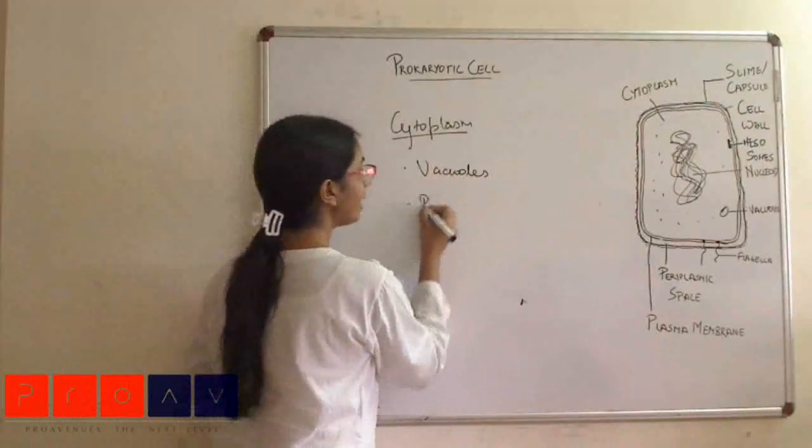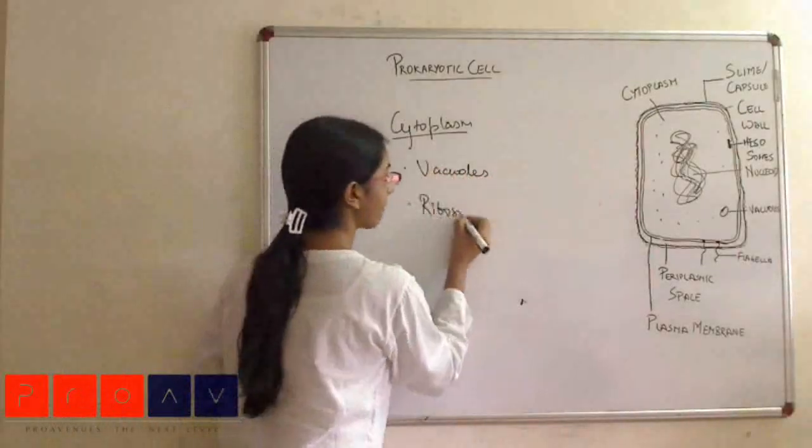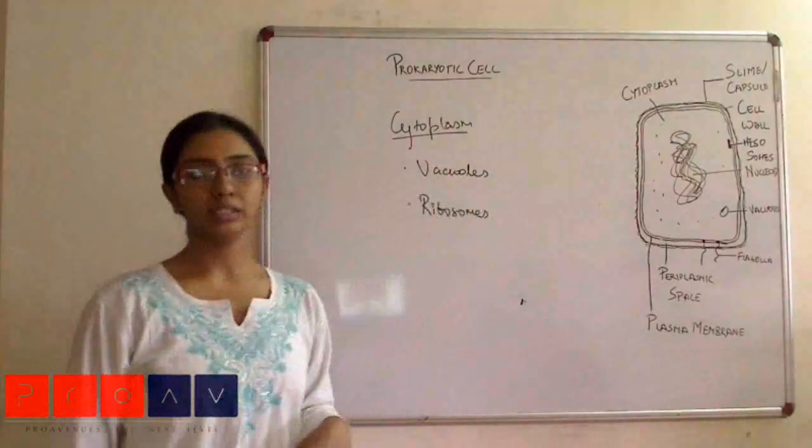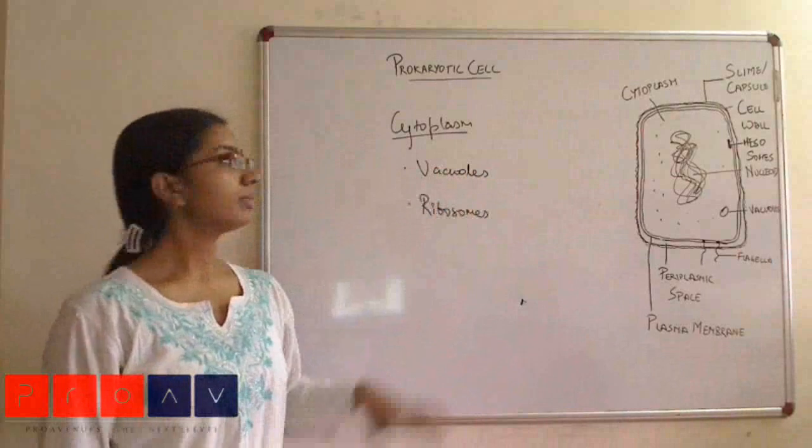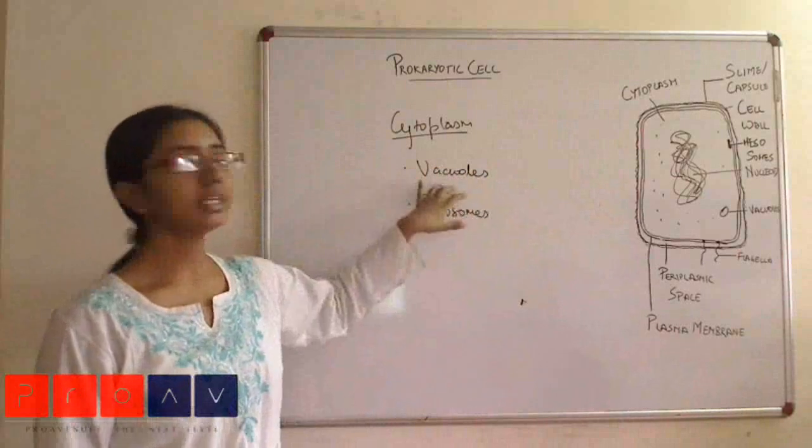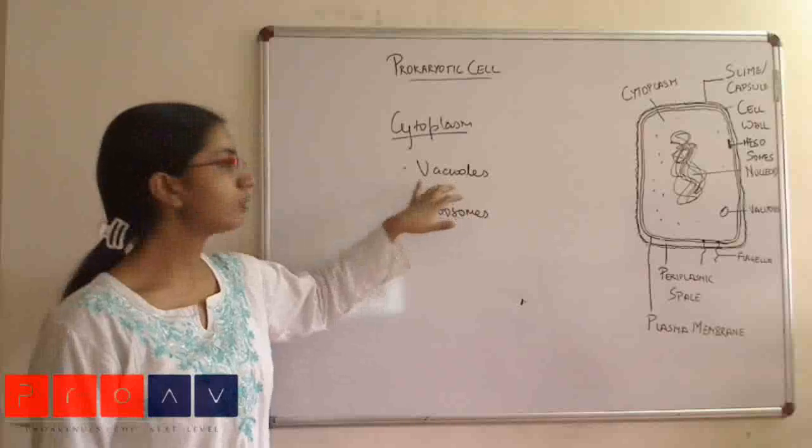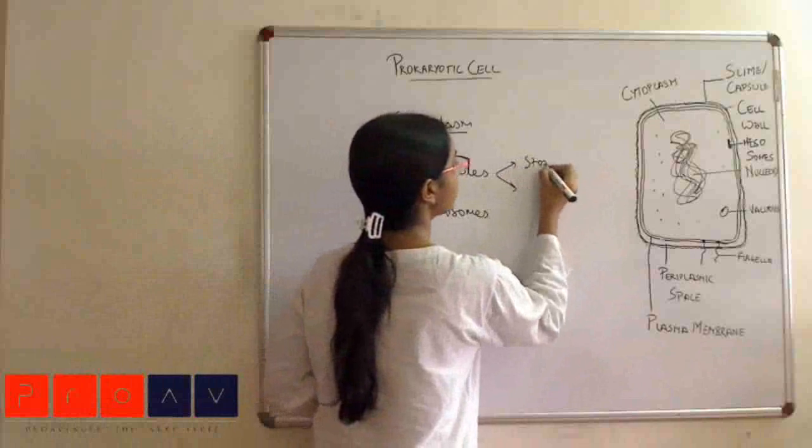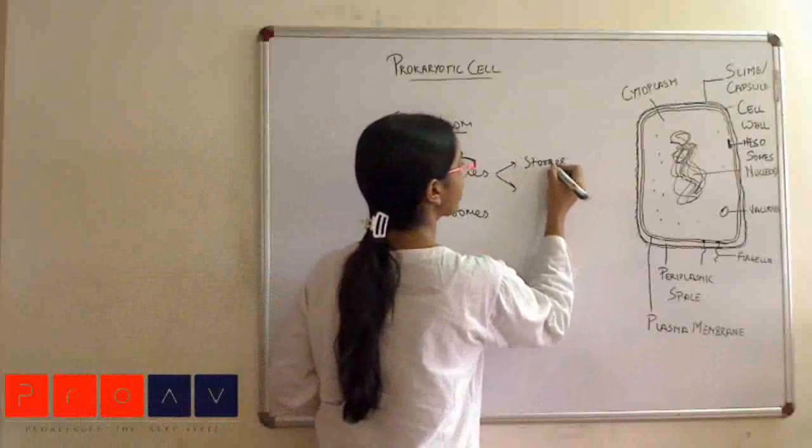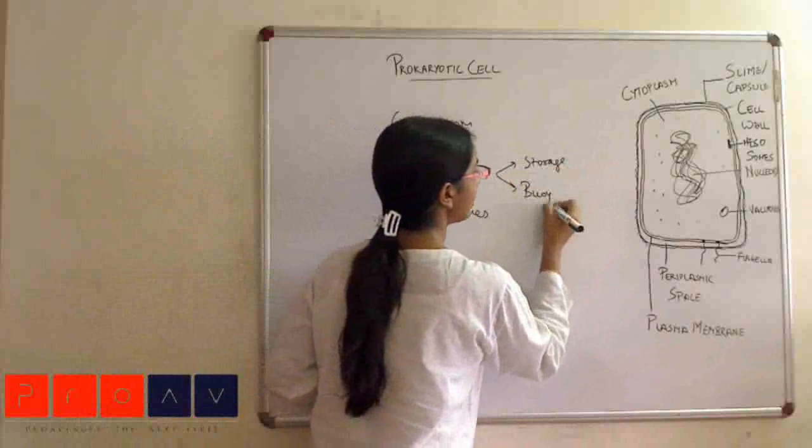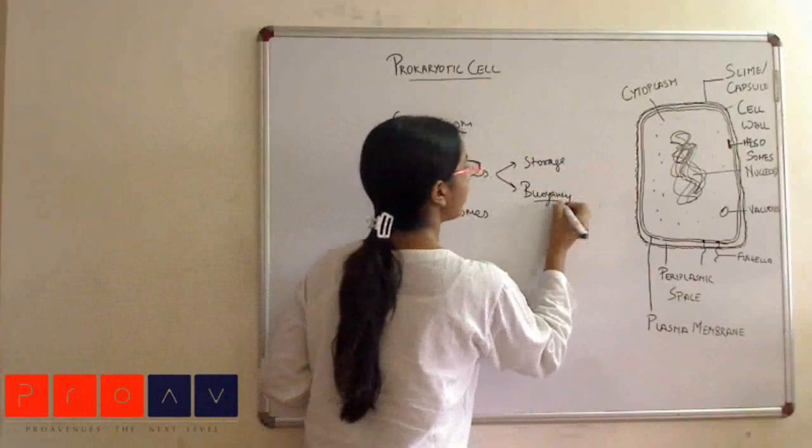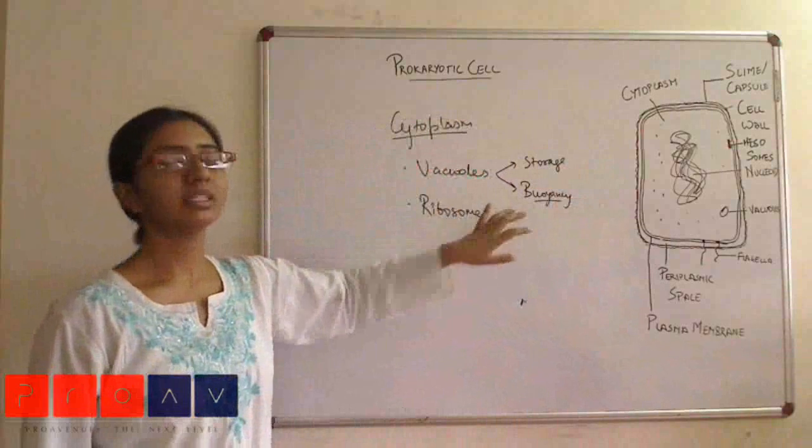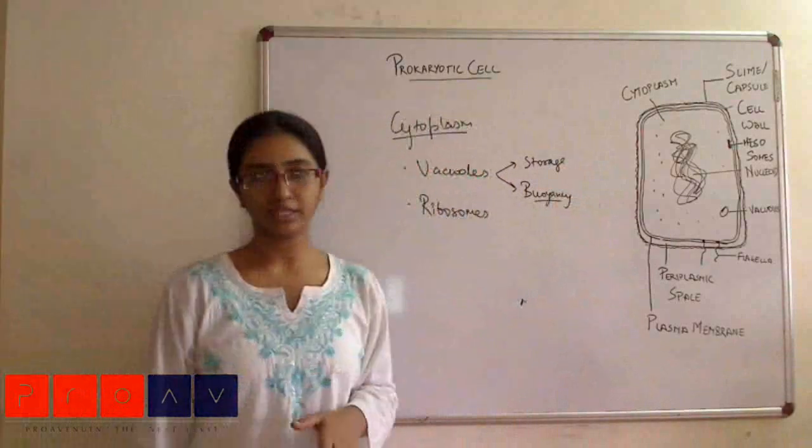Apart from them, we have ribosomes. These vacuoles can also be present in eukaryotic cells, but the function basically differs. So here in case of prokaryotic cells, the vacuoles basically would perform two functions: first is the storage and second is providing buoyancy to the cell. Buoyancy function would primarily be provided by the air vacuoles, and these occur in only very specific kinds of bacteria.